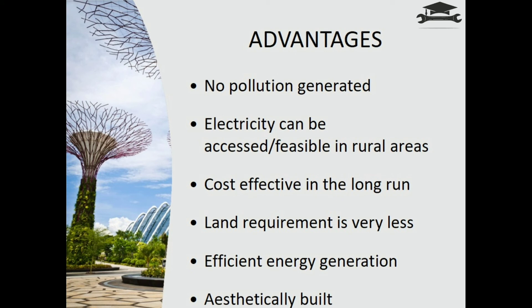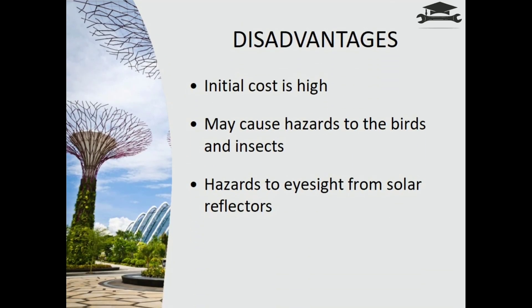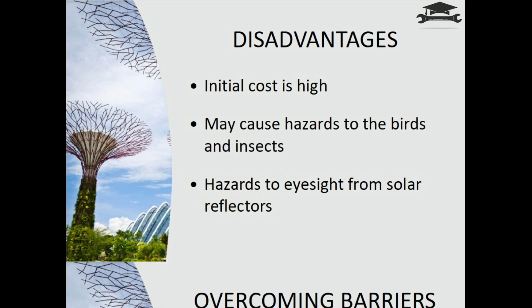Moving into advantages and disadvantages: similar to conventional PV systems, it doesn't generate pollution; electricity can be made accessible to remote rural areas — or more feasible, cutting short transmission costs over long distances. It is cost-effective in the long run, requires very little housing area, and has good efficient energy generation. Disadvantages include high initial cost; birds may damage the system by perching, pecking on reflective panels, or covering them with excreta, decreasing output. Cleaning and maintenance of panels is difficult compared to conventional ones, as they are mounted on tall stems. Reflective light from the panels is harmful to eyes, and though it doesn't use water or produce pollution during operation, the production of solar panels requires water and hazardous elements.